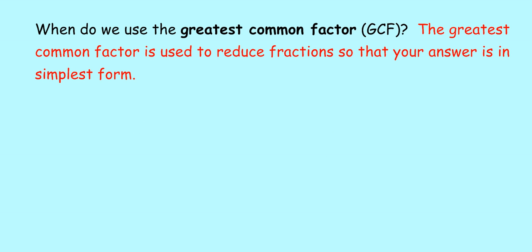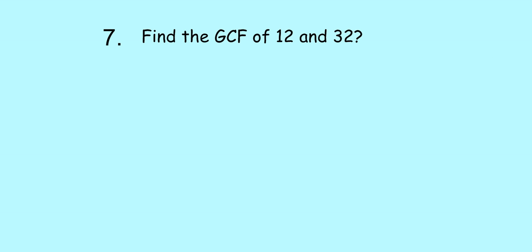Let's take a look at the greatest common factor. These are two concepts that often get mixed up: GCF and LCM. Remember, LCM is used to come up with common denominators so we can add and subtract. GCF is used to reduce fractions, to write fractions in simplest form. So the GCF is used to reduce fractions. We're looking at factors, not multiples. Factors are numbers that we multiply together.